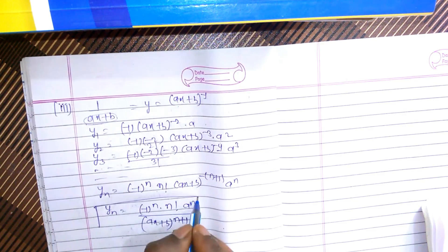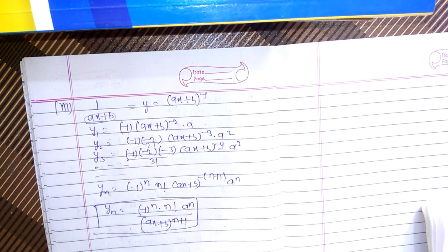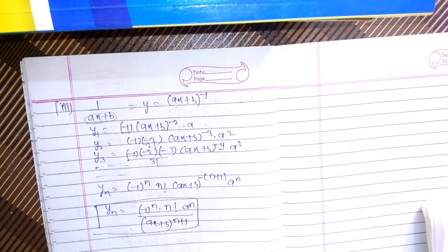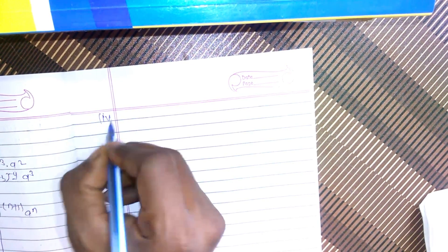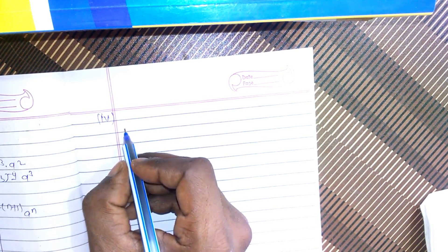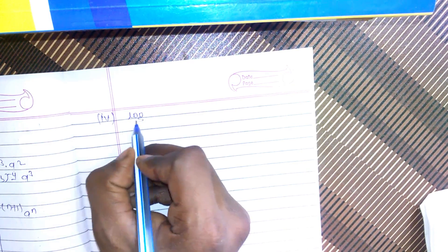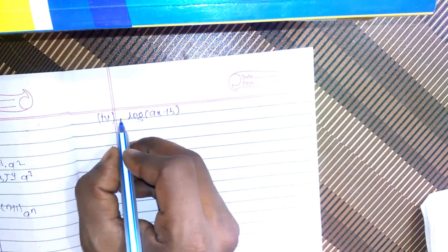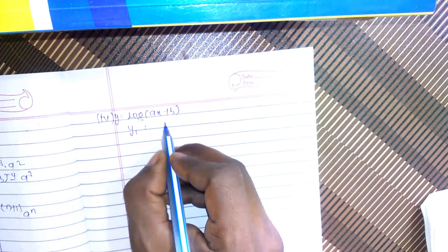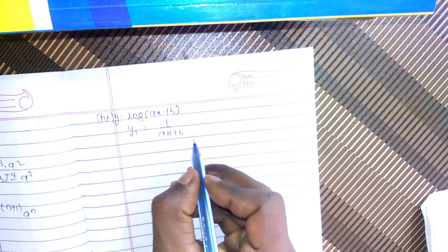That is the nth differential of 1/(ax+b). We could also replace n by m to get the mth derivative, but that is not required here. Moving on to the fourth equation: the nth differential of log(ax+b). So y equals log(ax+b). Then y1 equals 1/(ax+b) times a, which is the same as a·(ax+b)^(−1).